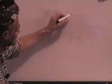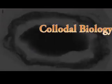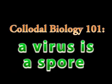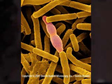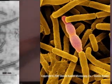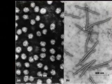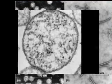We've got colloids of life that form into spores, and that's called a virus by modern medicine. These little things form into double spores, and they're still called viruses. Then these double spores fuse with other double spores and become a bacteria.